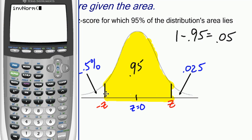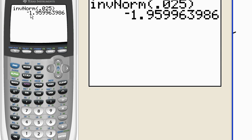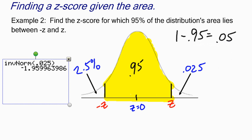I want the z-score where the area to the left is 0.025 or 2.5%. So I punch in 0.025, and when I hit enter I get negative 1.96 when rounded. So the z-score here is negative 1.96.